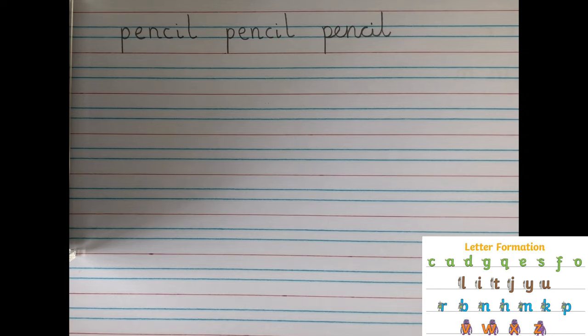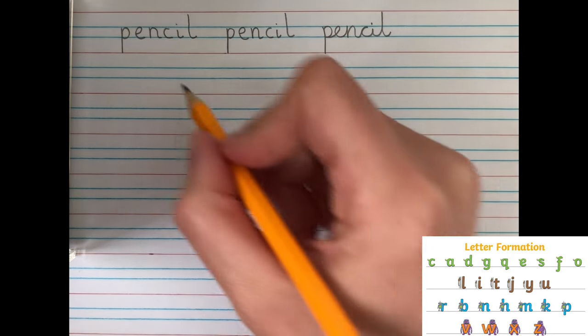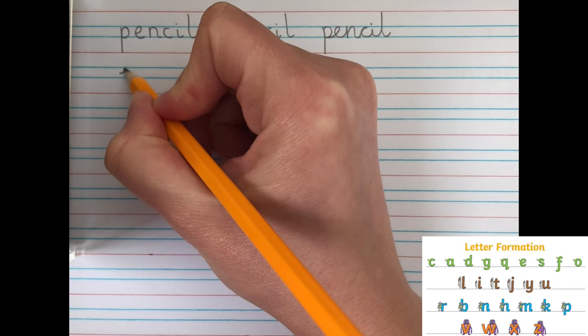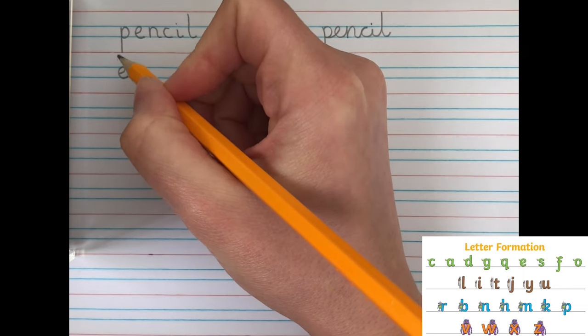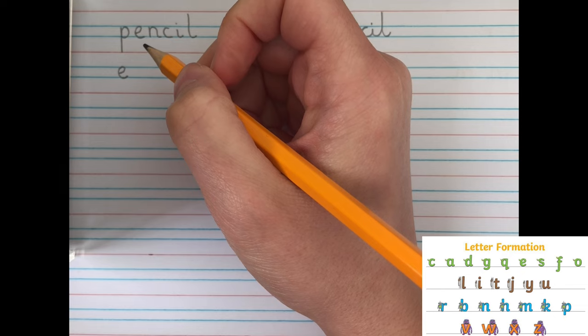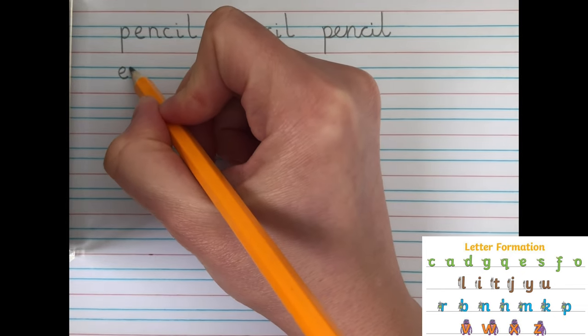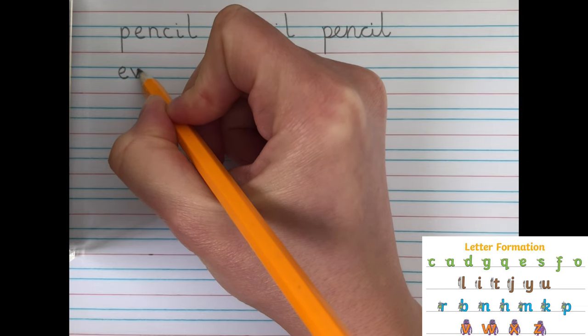Now, let's try writing the second word, which is evil. So, again, I've got a curly caterpillar, E. Now, we've got a type of letter we haven't seen yet so far, which is a zigzag monster. So, V needs to start here and go down there.